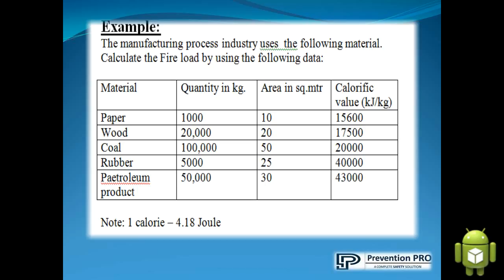The materials are paper, wood, coal, rubber, and petroleum product. Quantity in kilogram respectively are: 1,000; 20,000; 1,00,000; 5,000; and 50,000. Area in square meter are: 10, 20, 50, 25, and 30.